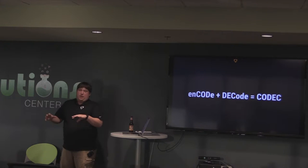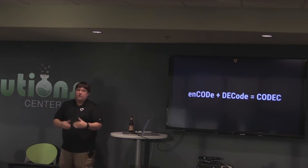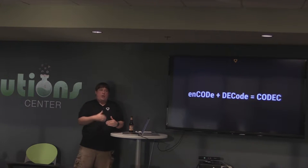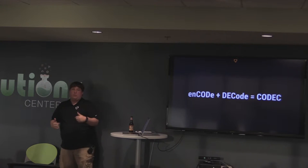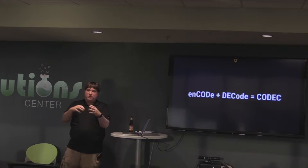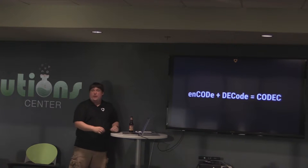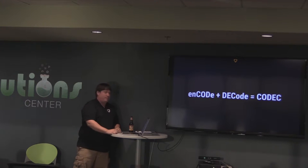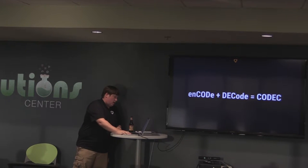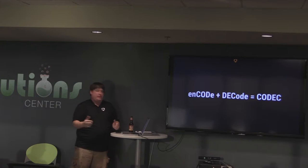The frames — key frames, B-frames, P-frames — are all combined into a stream using a codec. The word codec comes from encode and decode. Basically it's the rules, guidelines, and libraries that compress your frames into a stream encoded in a particular codec. Codecs come from corporations, standards groups, and there are a lot of different codecs out there.